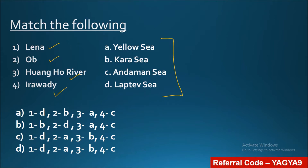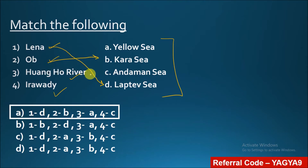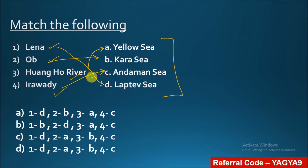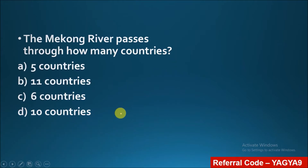The answer is: 1-D, 2-B, 3-A, and 4-C. So Lena River drains into the Laptev Sea, Ob River drains into the Kara Sea, Huangho River goes to the Yellow Sea, and Irrawaddy drains into the Andaman Sea — as you can see in this particular diagram.